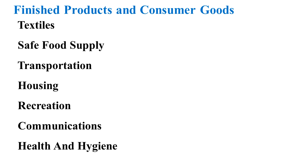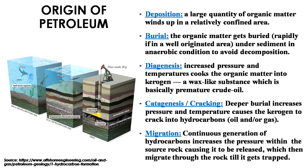Ultimately we use the end products in the form of textile, food supply, transportation, housing — even in our medicines, some form of petroleum products are used. So it is absolutely necessary in our day-to-day life and that is why we need to learn about petroleum more. Let us now talk about the origin of petroleum. There are four steps through which organic matter found in nature is transformed into petroleum, and the first process is deposition — we need a large quantity of organic matter deposited in a relatively confined area.